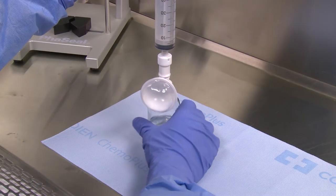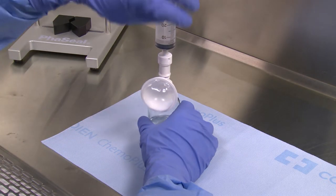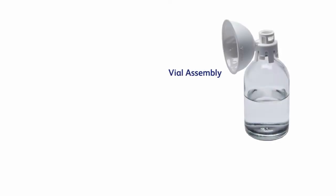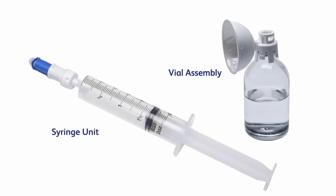Let's examine the procedure for preparing a syringe from a single drug vial. Before beginning, prepare a BD-facile vial assembly. For reference, please see the module on building the vial assembly. You'll also need to prepare a BD-facile syringe unit. For reference, please see the module on building the syringe unit.